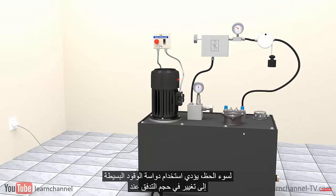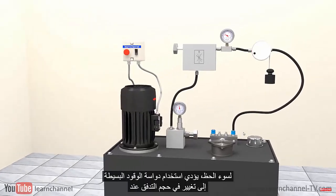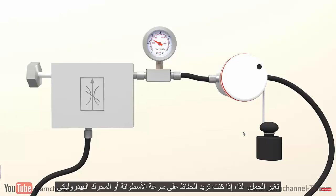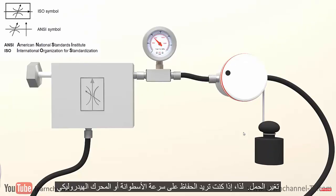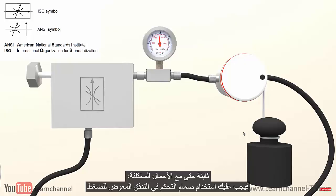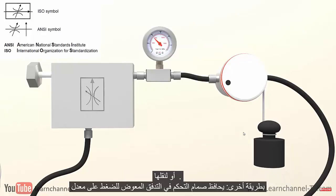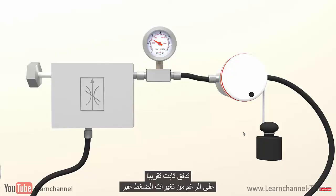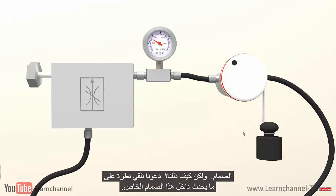Unfortunately, using a simple throttle leads to a change in volume flow when the load changes. So, if you want to keep the speed of a cylinder or hydraulic motor constant, even with different loads, you should use a pressure compensated flow control valve. A pressure compensated flow control valve maintains an almost constant flow rate in spite of pressure changes across the valve.